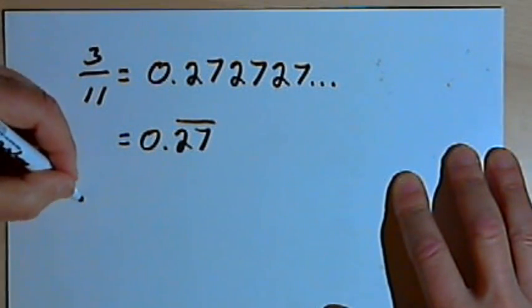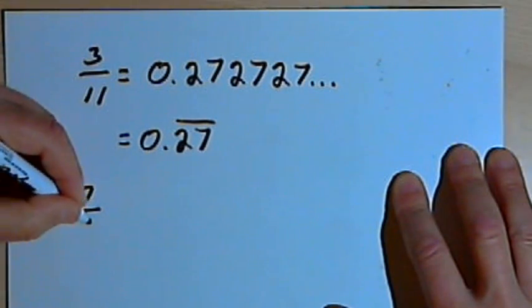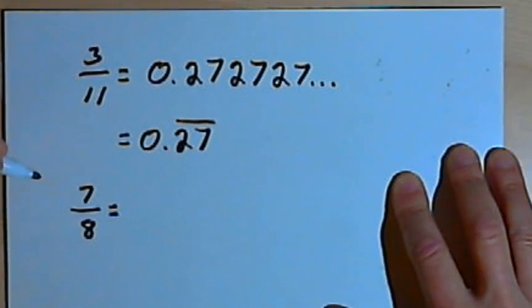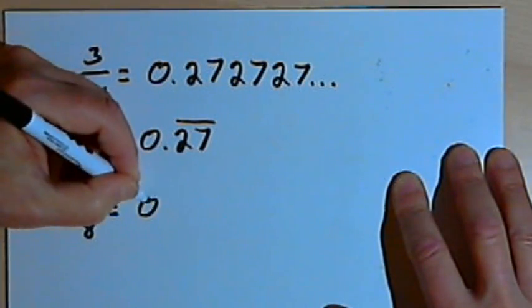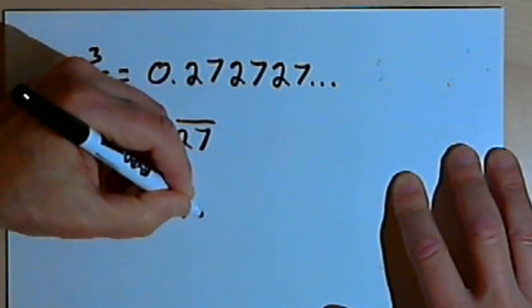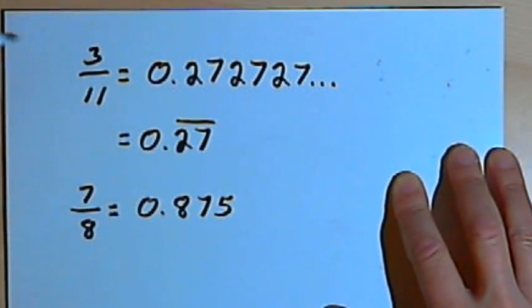Now other times you might divide a fraction, you might have a fraction like 7 over 8, and when you turn that into a decimal, you end up with what's called a terminating decimal. So 7 over 8 is going to turn into 0.875.